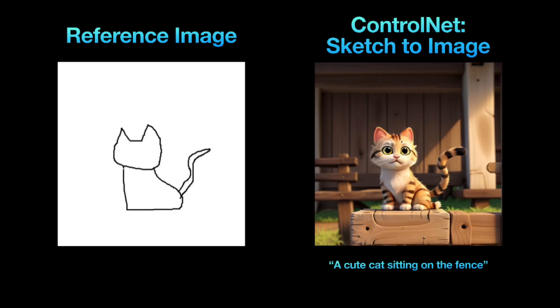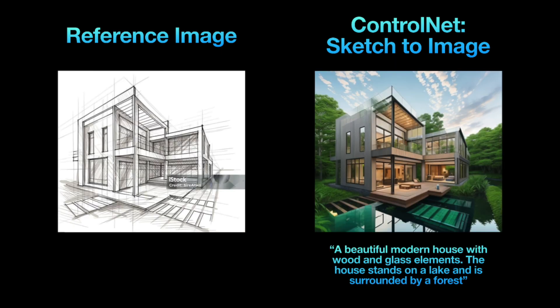The Sketch option turns a sketch or scribble into a finished image. It's handy for images where you want the AI to follow a specific composition. For instance, here's a scribble of a cat that I used to generate an image using the 3D animation style model — the prompt I used was 'a cute cat sitting on the fence.' Another example is this architectural drawing of a house. I had Leonardo transform it into a beautiful rendering of a modern house in the woods.